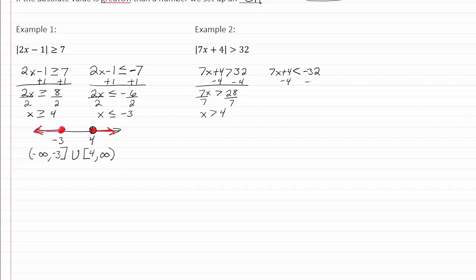So subtract negative four from both sides, we get 7x is less than negative 36 over 7.